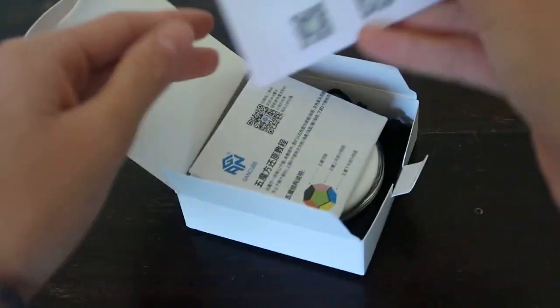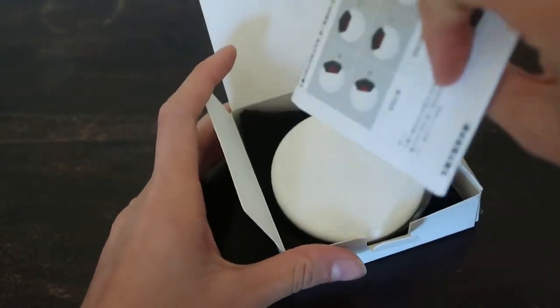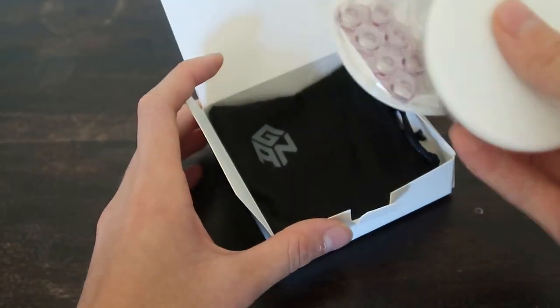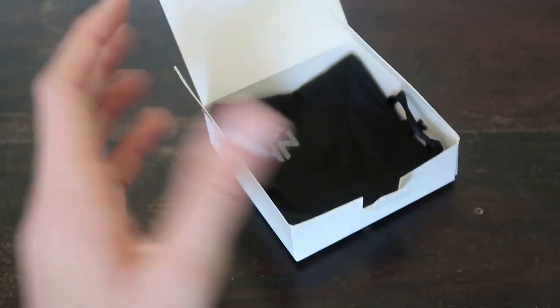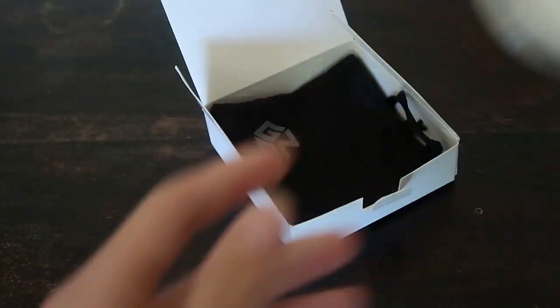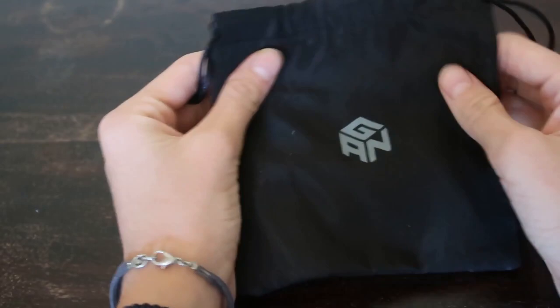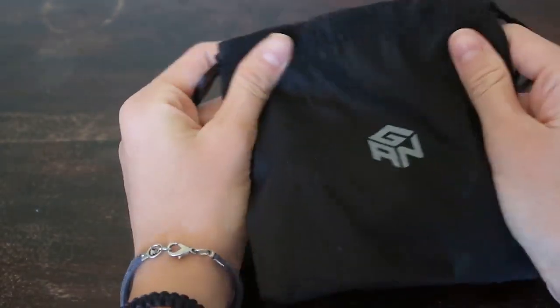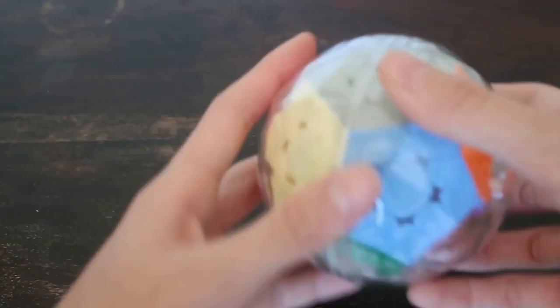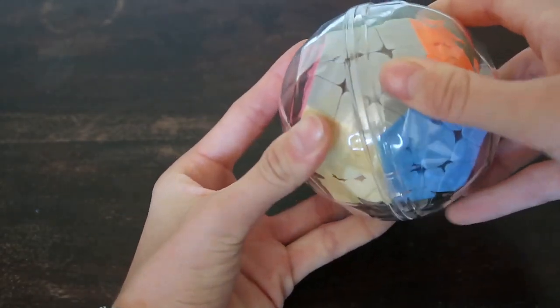There's a nice card you always get from GAN with solving instructions, GES nut tool, though they're not numerical which is kind of bad. I feel like they could easily put that in. There's a nice GAN bag, different material than usual. I don't really care about those accessories; all I care about is the cube.